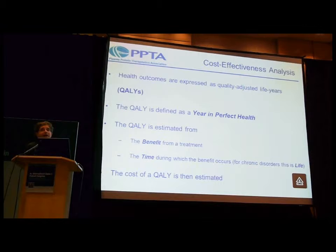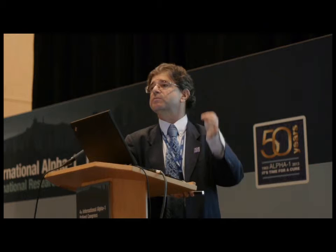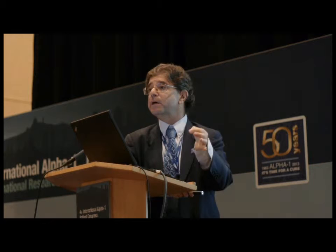The QALY is estimated from the benefit of a treatment and the time during which the benefit occurs. Once diagnosed with alpha-1-antitrypsin deficiency and put on a treatment, that is treatment for life — because this is a chronic disorder, until we have something like the promise of gene therapy described yesterday. Health technology assessment authorities calculate the cost per QALY and make a decision on whether the treatment should be reimbursed on the basis of that cost per QALY.